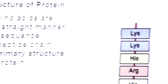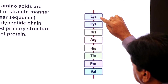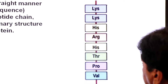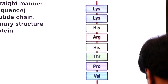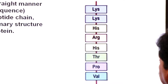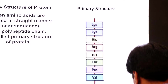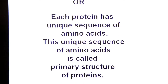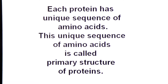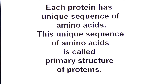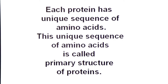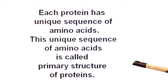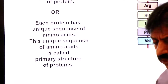Here you can see a linear, straight arrangement of amino acids. This is called the primary structure of protein. Each protein has a unique sequence of amino acids, and this unique sequence of amino acids is called the primary structure of protein.